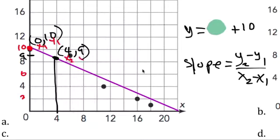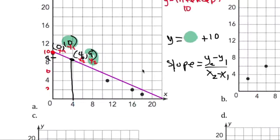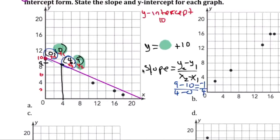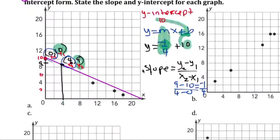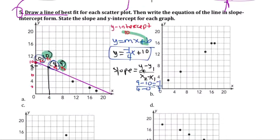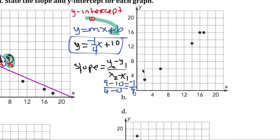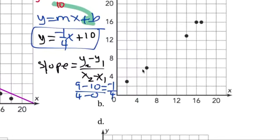I'm going to use (0, 10) as my first ordered pair, labeled 1, and (4, 9) as my second, labeled 2. So: 9 minus 10 over 4 minus 0, which gives negative 1 over 4. My slope is negative 1/4. The equation is y equals negative 1/4 x plus 10. That's your equation of that line. Every student may have a different equation depending on where they draw their line.